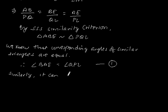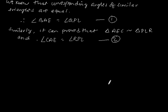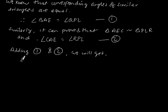Similarly, it can be proved that triangle AEC is similar to triangle PLR, and angle CAE is equal to angle RPL. Let this be equation 2. Now, adding equation 1 and equation 2, we get angle BAE plus angle CAE is equal to angle QPL plus angle RPL.